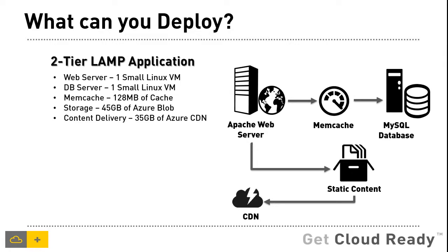So what exactly can you deploy? If you are a Linux shop looking at deploying a simple two-tier LAMP application, you can deploy your web server running Apache in one small Linux VM and your MySQL database in another small Linux VM. That takes care of your compute requirement, and you can also leverage the memcache protocol support that comes with Windows Azure Cache, going up to 128 MB.